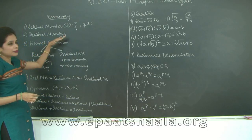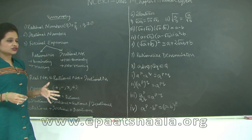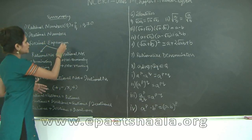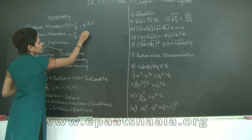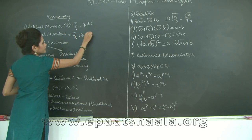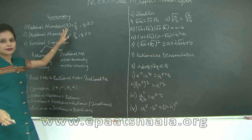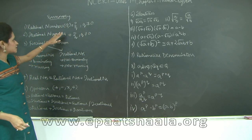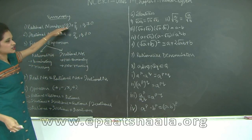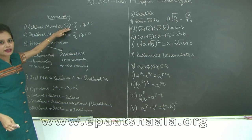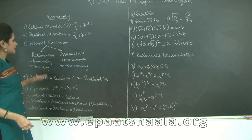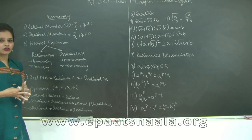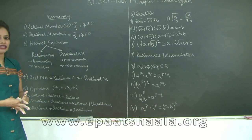Irrational numbers are the complete opposite of rational numbers. They cannot be represented in the form of p upon q where q is not equal to 0. There is no alphabetical representation for irrational numbers like we have Q for rational numbers.